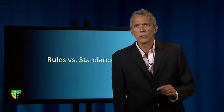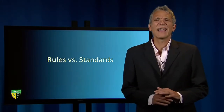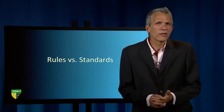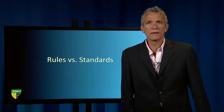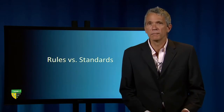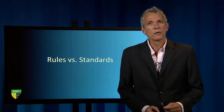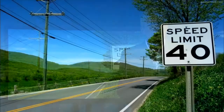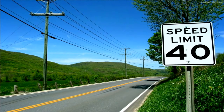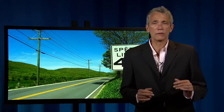You can use the rules-standards distinction to categorize any law or regulation that you learn for the rest of your law school career. Consider a classic example of speed limits. A law regulating driving speed could require drivers to drive less than 40 miles per hour, or it might require drivers to drive at a reasonable speed. The former kind of injunction is a rule; the latter is a standard. The 40 miles per hour speed limit is a rule because it's clear, objectively measurable, and most importantly, knowable in advance.